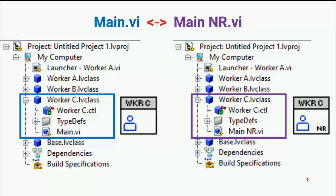You need a convert tool because Workers is designed to be used seamlessly between both Windows and real-time targets. Say you develop a worker for a Windows application and then want to reuse it on a real-time target but run into issues and need to debug the worker's QMH on the real-time target — you simply use the RT Worker Convert Tool to convert the worker's main VI into its non-reentrant form, then debug with standard LabVIEW tools such as adding breakpoints and probing wires. That's the reason behind this tool.